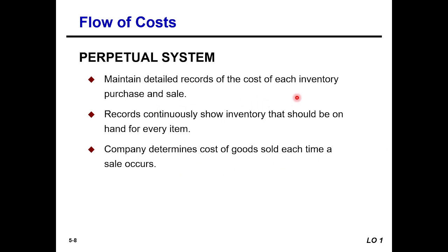The perpetual inventory system maintains detailed records of the cost of each inventory purchase and sale. For example, when we purchase a mobile phone set, we record it; when we sell it, we record that too. Records continuously show the inventory that should be on hand for every item. When a sale occurs, the system determines the cost of goods sold at that moment, making it easy to track inventory at any time.